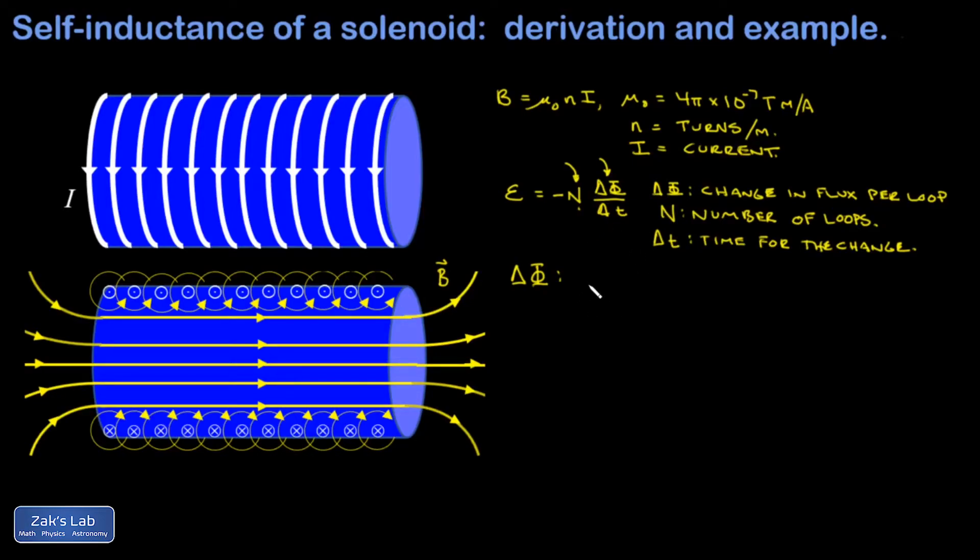I'm going to write it first as A times B final minus A times B initial. There I'm using the formula for flux given by the area of a loop times the intensity of the magnetic field. When the magnetic field is perpendicular to the loops like it is in this case, it's that simple to measure flux. I can relate the field inside this coil to the current running through it by using our first formula. My change in flux is given by A mu naught n times the change in the current.